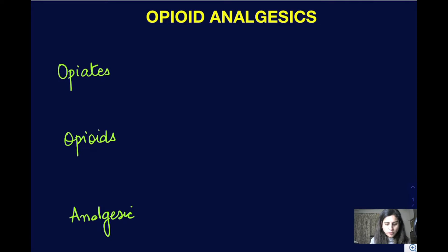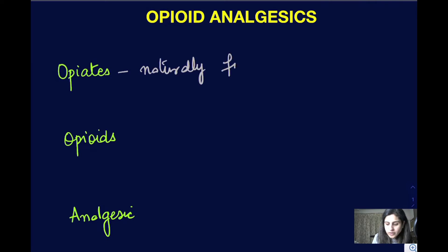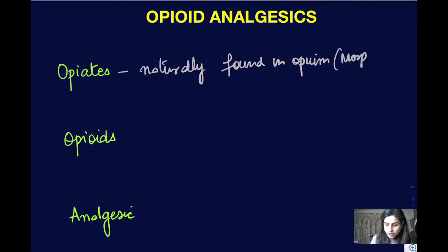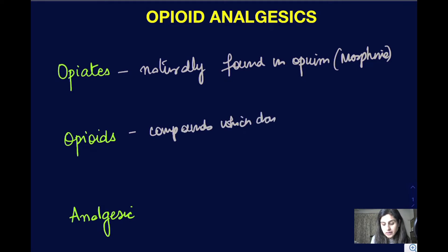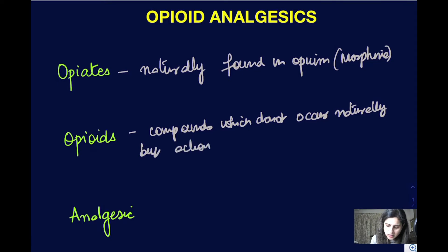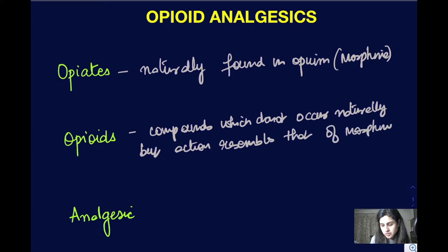Opiates are naturally occurring compounds found in opium — for example, morphine. Opioids, on the other hand, are compounds that do not occur naturally; they are not found in opium. They can be synthetic or semi-synthetic, but their action resembles that of morphine. For example, pethidine is an opioid because it resembles morphine in action but is not found naturally. This is the difference between opiates and opioids.